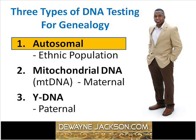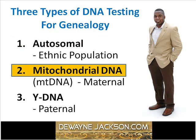First, there are autosomal DNA tests that provide a breakdown of all the ethnic populations that make up your DNA. Next, there are those that test for the mitochondrial DNA. The important thing to know about mitochondrial DNA is that it's the type of DNA used to check your mother's direct female lineage. The third and last type of DNA test we'll discuss today is the type that checks for your Y DNA.